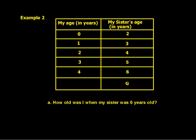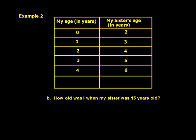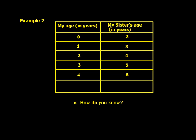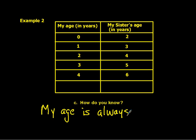Example number two. How old was I when my sister was six years old? How old was I when my sister was 15 years old? I know because my age is always two years less than my sister.